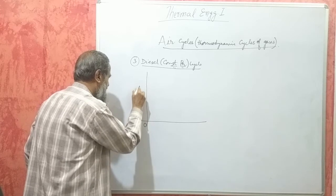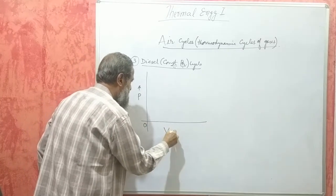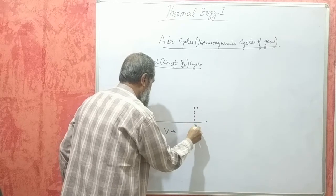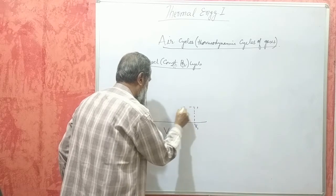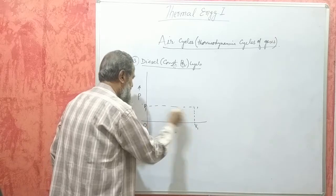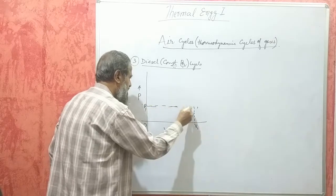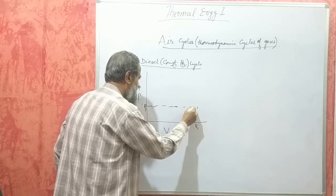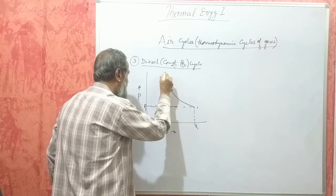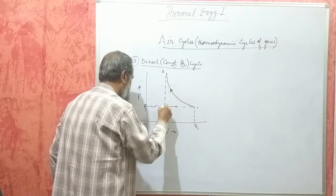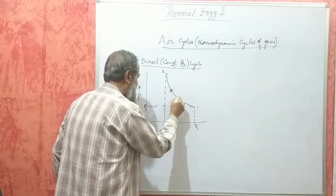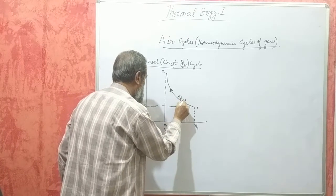In this cycle, the PV diagram will be like this. We take a gas, that is air — only air here. We do not take a mixture of air and fuel. The air is admitted into the cylinder and it is compressed adiabatically. This is the adiabatic process up to V2.